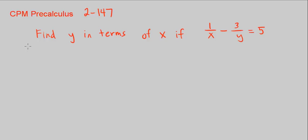This is CPM Pre-Calculus Chapter 2, number 147. Here we're asked to find y in terms of x. The equation is 1 over x minus 3 over y equals 5.